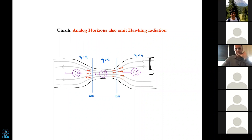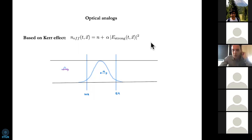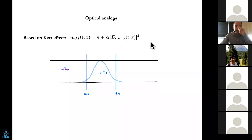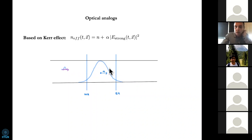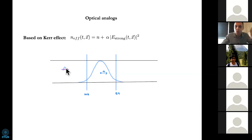Now let me go to optical analogs, because these analog black holes can also be created with optics. This is not a pipe, but rather an optical fiber or a crystal. I put a strong pulse — a pulse of radiation propagating inside — and I'm going to consider weak pulses propagating on top of that. These weak pulses are my probes, the analog of phonons in the previous example. This strong pulse is going to create the black hole.